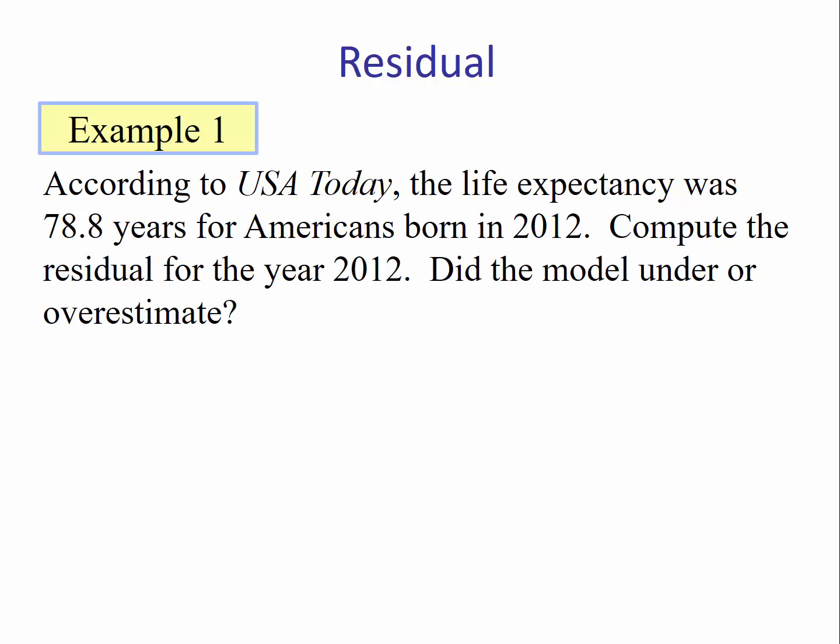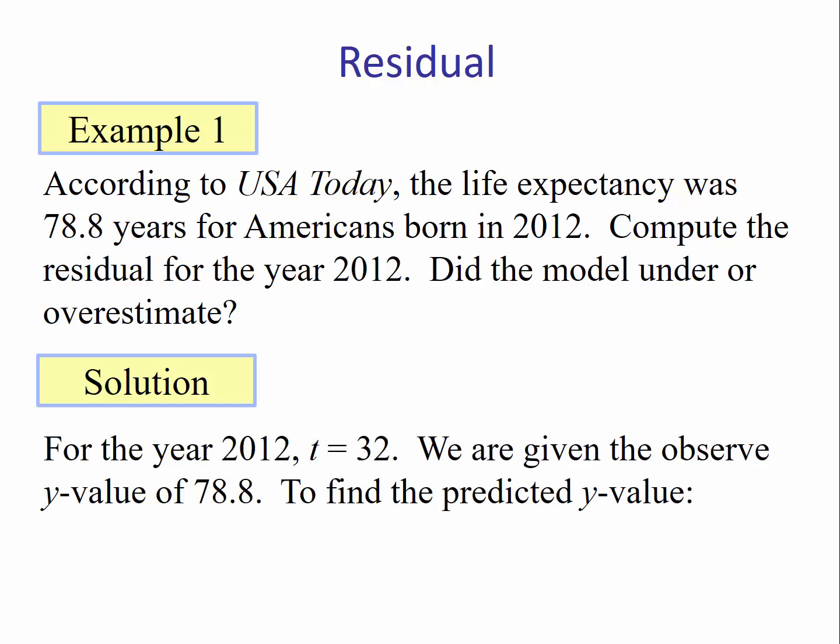Solution: For the year 2012, t = 32. We have our independent value 32 and we have the observed y-value of 78.8. So when t is 32, the y-value is 78.8. Now we need to figure out what is the predicted y-value for t = 32.